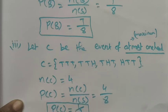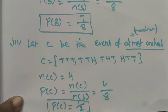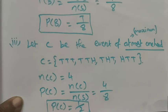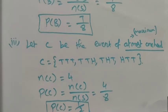Simplifying 4 out of 8, we get P(C) = 1 out of 2. So the probability of getting at most one head — maximum one head — is 1 out of 2.